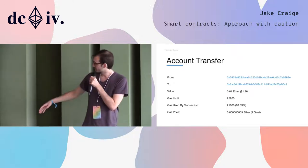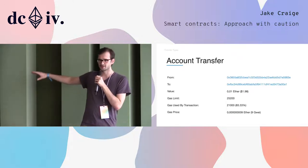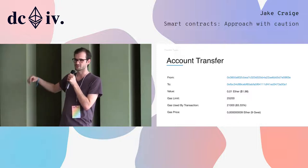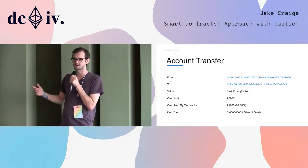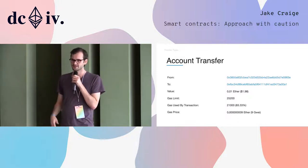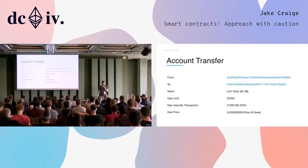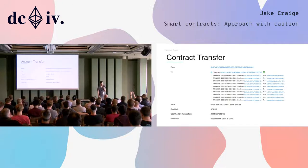Account transfers are pretty straightforward. This is what you'll see on Etherscan, and what you'll get back from your node if you ask for a transaction. It's going to look like this — there's a from, there's a to. Calculating how much value went where is pretty easy, and there's not really much risk here. If it says a transaction happened in this format, it did, and you're good to go.